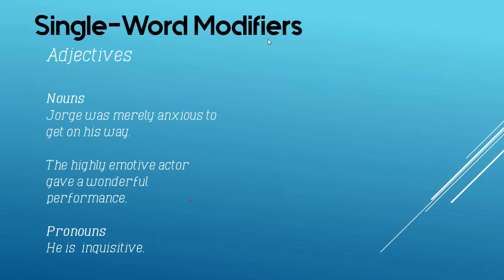Now, let's go to single word modifiers. When we say single word modifiers, one word. So, when I say modifier, it could be an adjective or an adverb. But first, let's recap all about adjectives. Adjectives, as we all know, describe nouns.